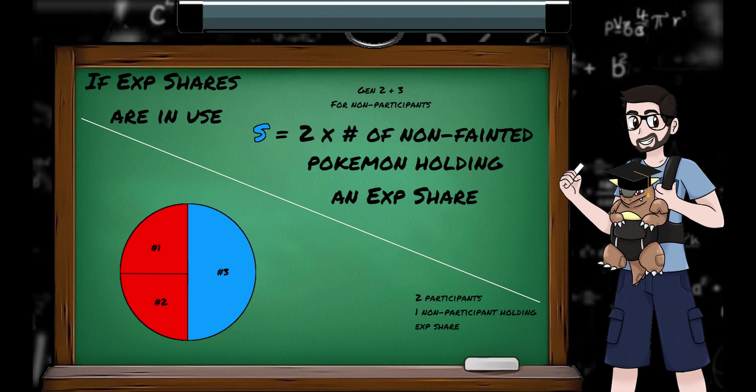So if we had a battle with two participants and one non-participant holding the XP share, we see Pokemon 1 and 2 receive a quarter of the total pot, with the XP share holding Pokemon number 3 taking the rest. And if we have one participant and three non-participants holding the XP share, we see Pokemon 1 getting 50% of the pot, with the pacifists receiving a third of the share half, or one sixth of the total pot.